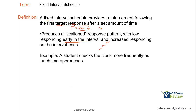A fixed interval schedule produces a scalloped response pattern — low responding early in the interval and increased responding as the interval ends. If you have to wait five minutes for reinforcement and you know that, why would you respond quickly in the first one or two minutes? No matter how much you respond — since it's not based on responses — you still have to wait five minutes. So there's really no point in responding heavily early in the interval.